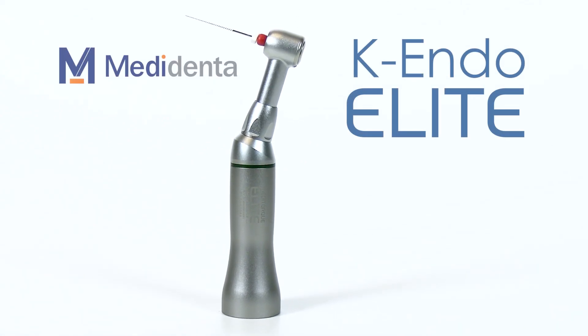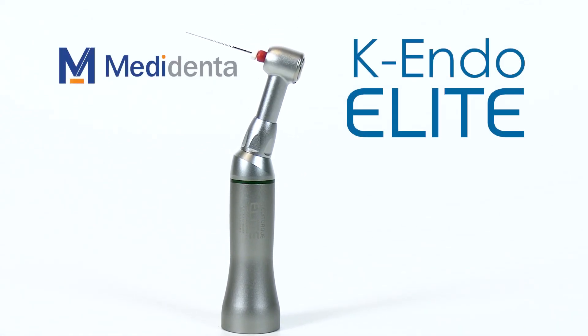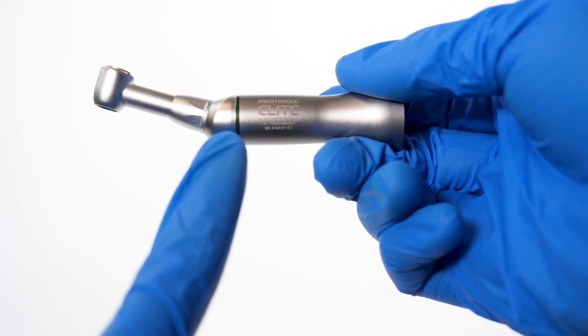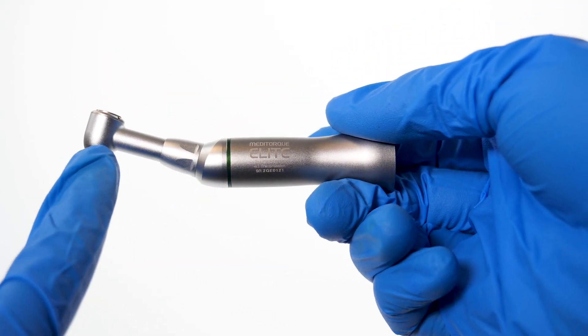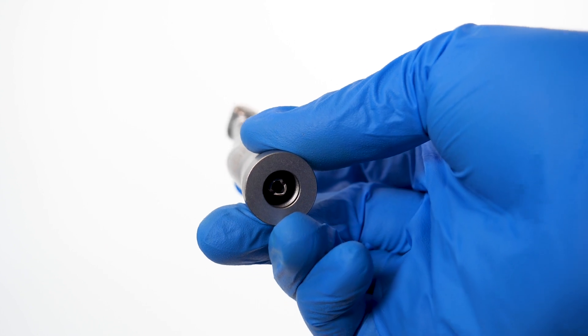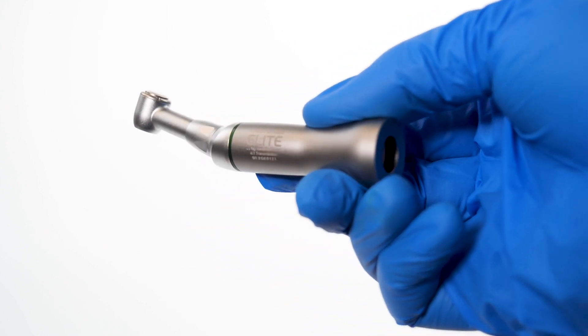The K-Endo Elite is an essential endo attachment for root canal therapy. It features a smooth stainless steel titanium finish and an E-type configuration for use with any E-type restorative motor.